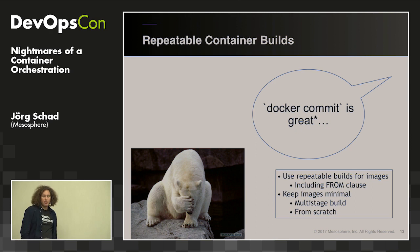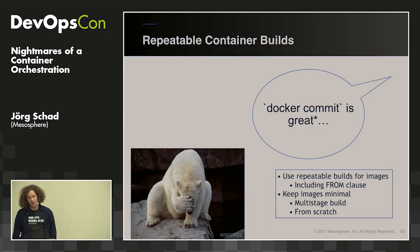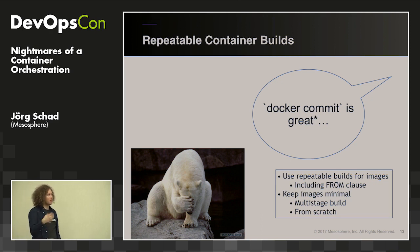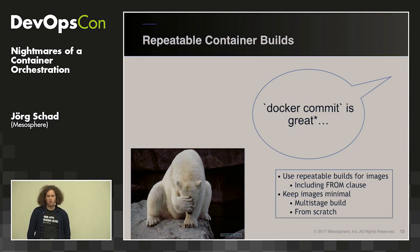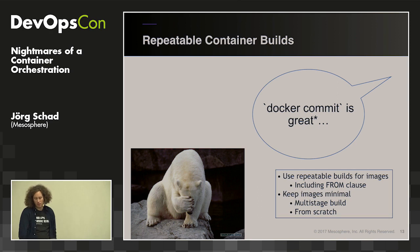Any container thrown onto your production cluster should come out of a Dockerfile. Docker commit allows you to go into a container and commit whatever you've changed, but in practice this leads to problems because you can't really rebuild your container. Each container you deploy in a production system should be repeatably buildable from a versioned Dockerfile.